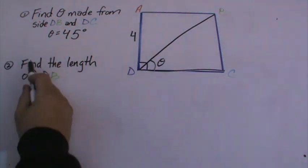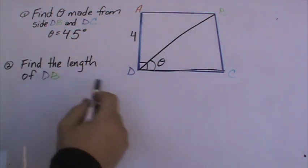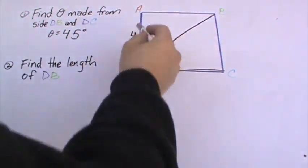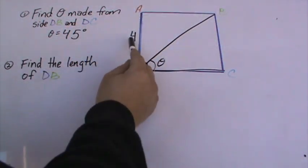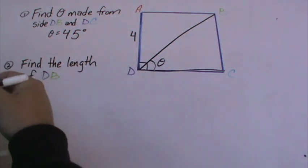The next question is, find the length of DB. So in this square, we see that AD is 4. They're asking us for the length of DB.